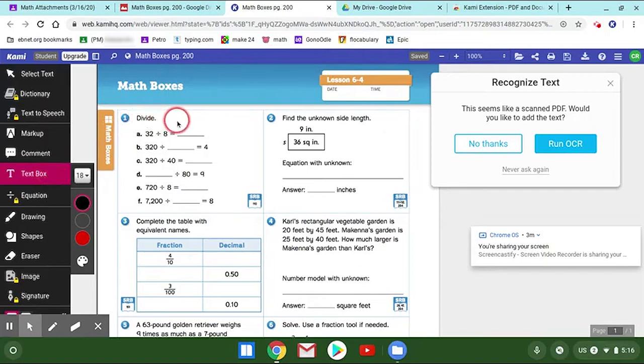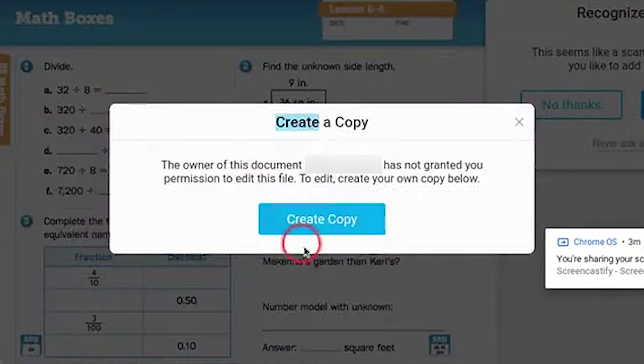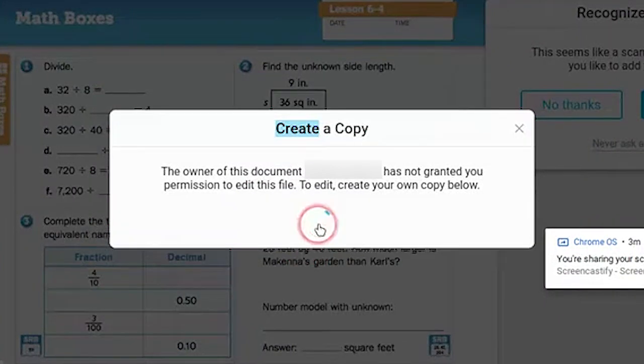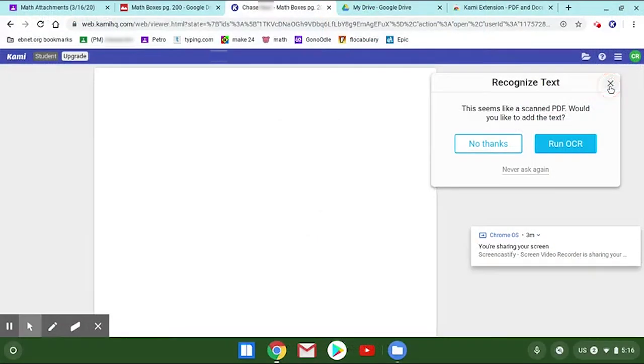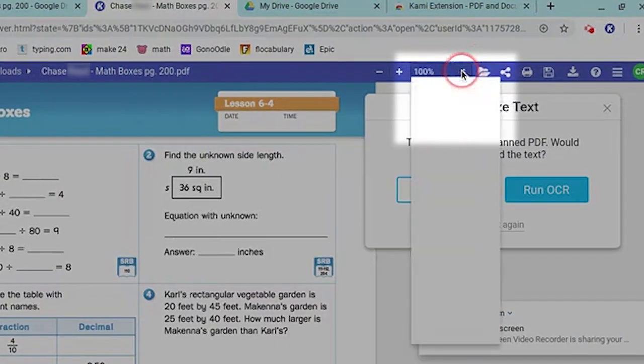You're going to need to click where you want to type, but it's not going to work—you're going to have to hit Create a Copy. On the top of the blue, you'll see 100%. You can click that.